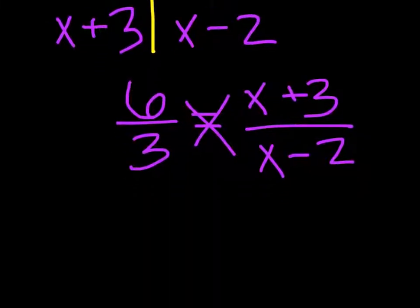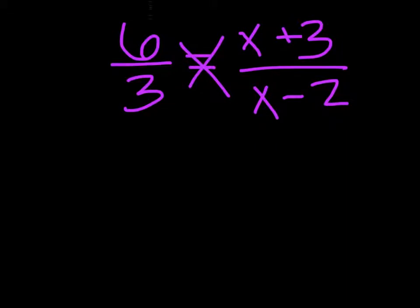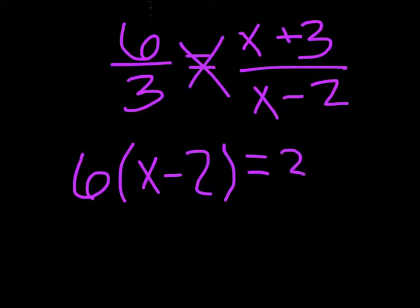So to cross multiply, we have to do 6 times x minus 2 equals 3 times x plus 3.